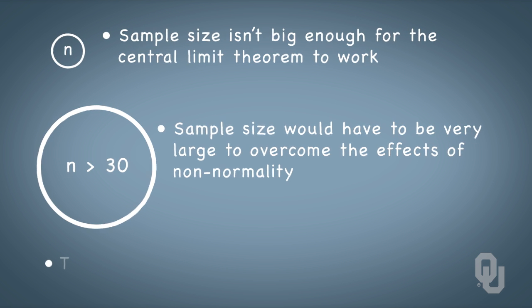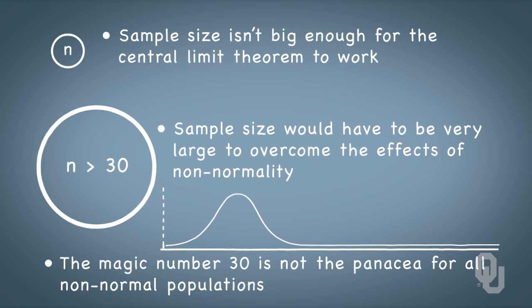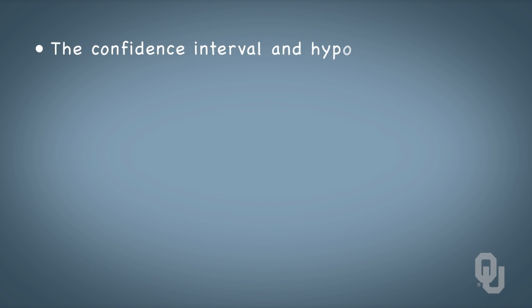Remember, the magic number of 30 is not the panacea for all non-normal populations. For example, the sample needs to be much larger for highly skewed population distributions.